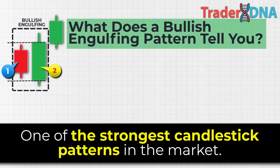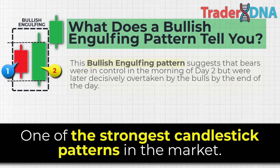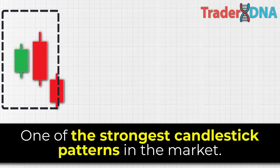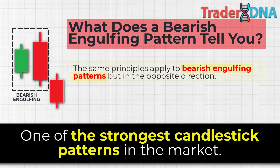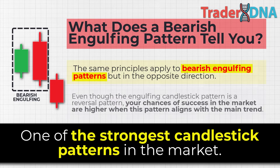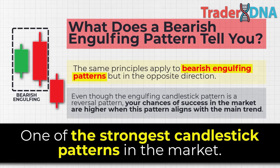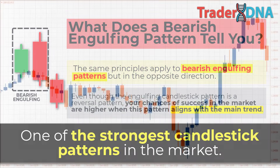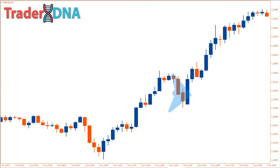The bullish engulfing pattern suggests that bears were in control in the morning of day two but were later decisively overtaken by the bulls by end of day. The same principles apply to bearish engulfing patterns in the opposite direction. Even though the engulfing candlestick pattern is a reversal pattern, your chances of success are higher when this pattern aligns with the main trend — so you shouldn't trade any engulfing pattern blindly.